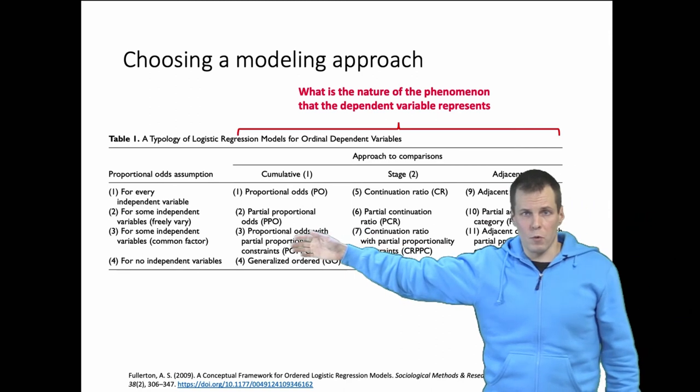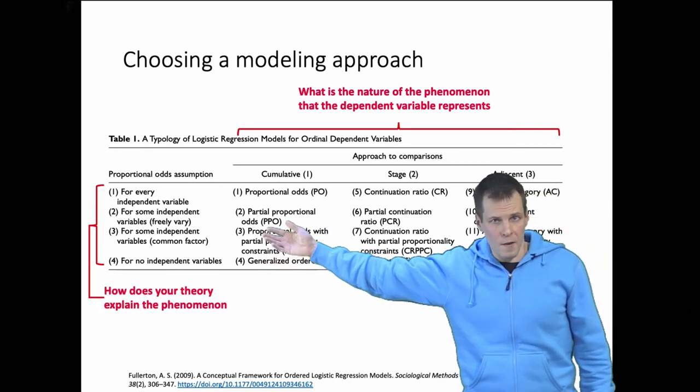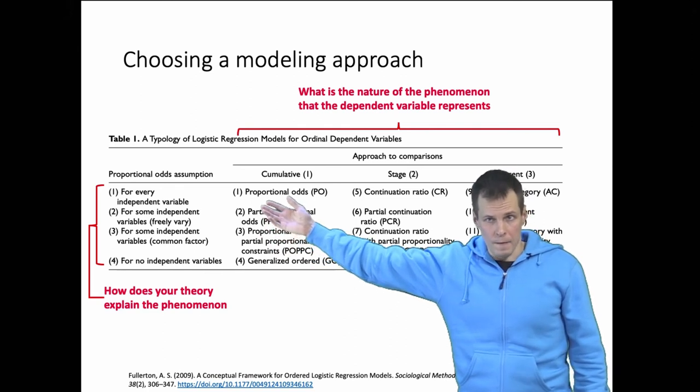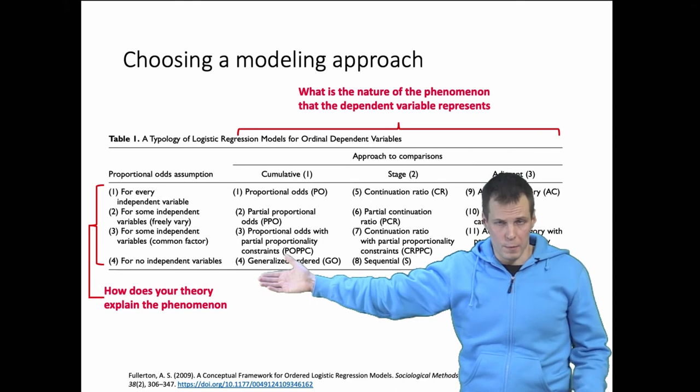How do you present the variable? How do you explain the transitions? Is the effect going to be the same for all transitions, or are the effects going to be different within each transition?